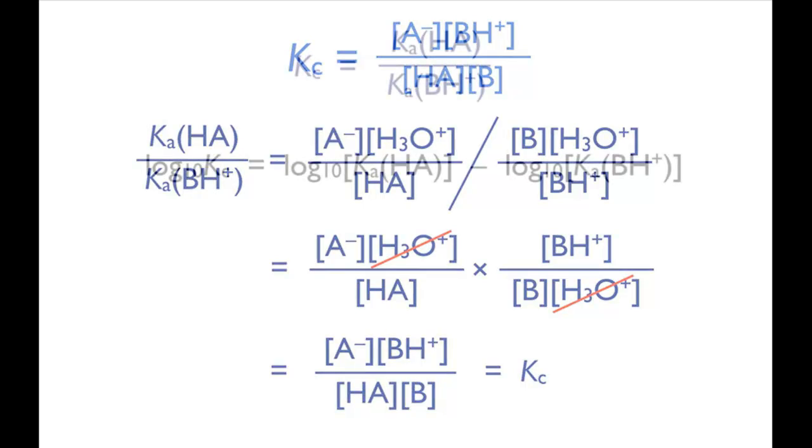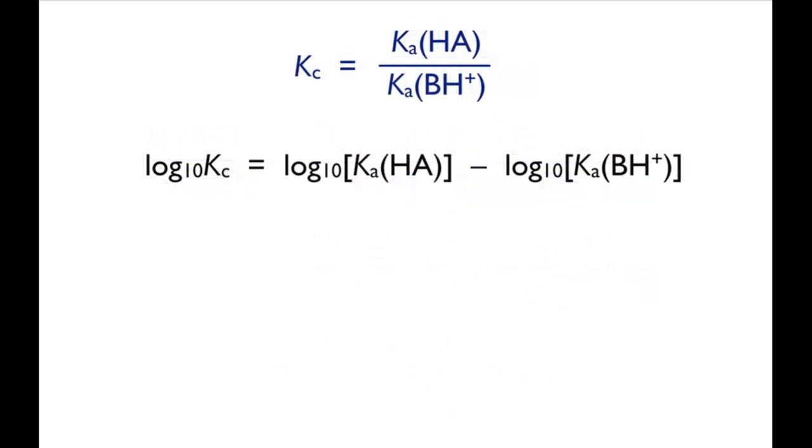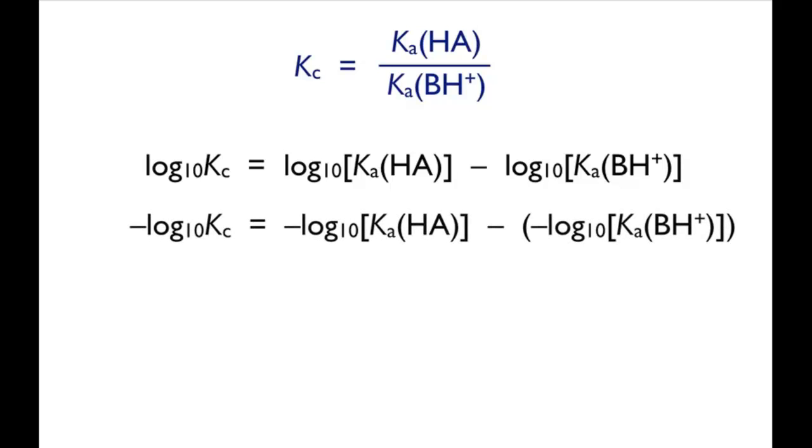As a next step, take logarithms of each side and use the fact that minus log to the base 10 of K is defined as pK. This gives you an expression for K in terms of the commonly available pKa values, which means that you can use these to predict not only the direction of an acid base reaction, but also the value of the equilibrium constant.